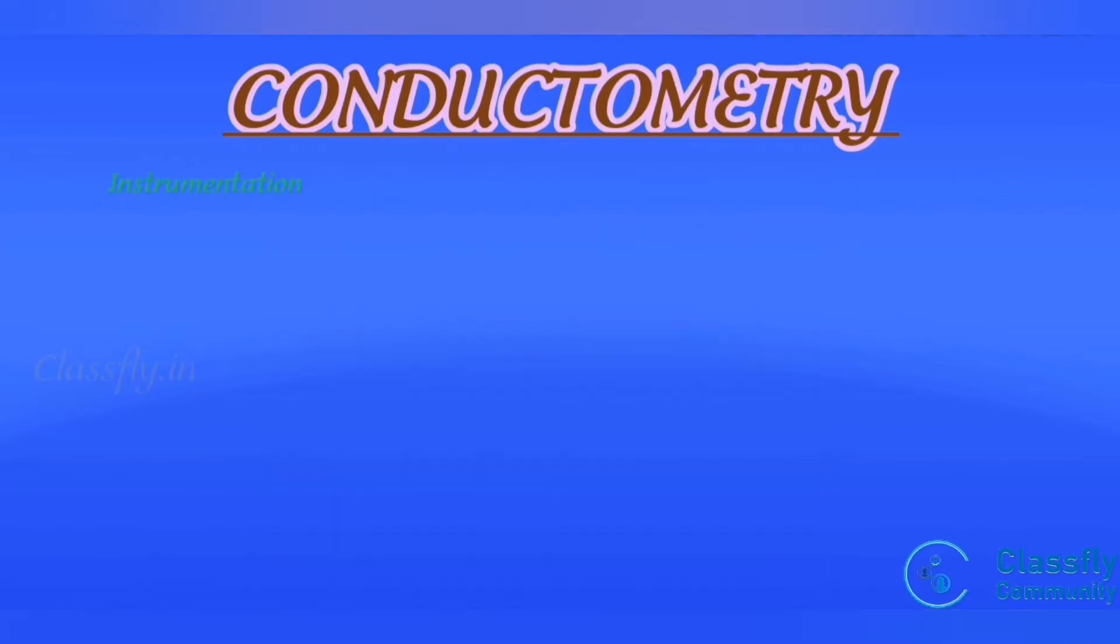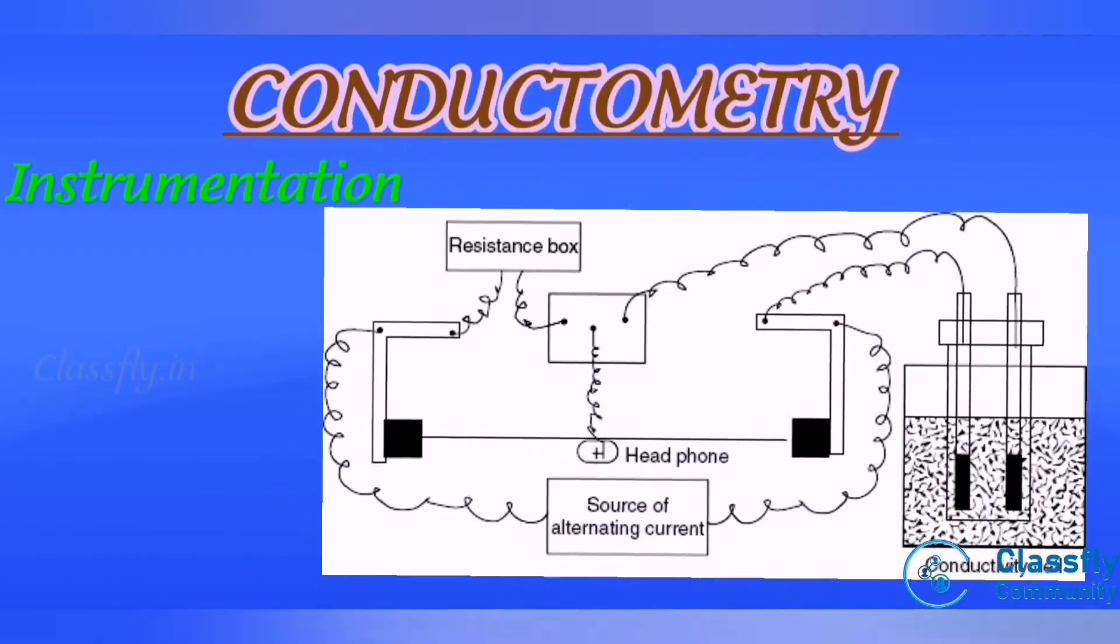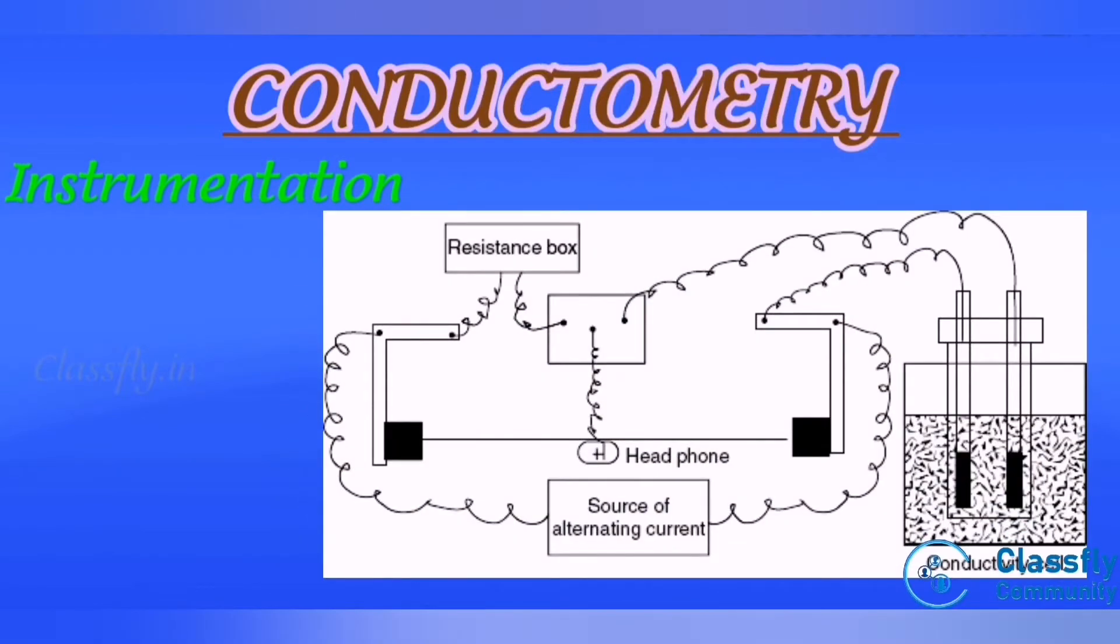Instrumentation: The instruments used for measurement of conductance are known as conductometers. It consists of: first one, current source, that is mechanical high frequency AC generator. DC current is not employed in conductance measurement because the electrodes become polarized, leading to high cell resistance.